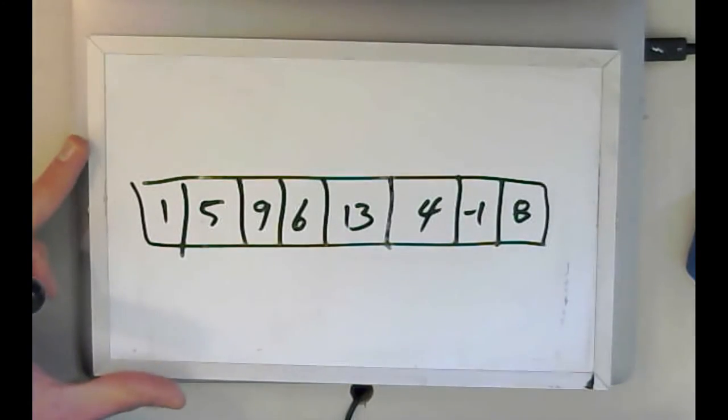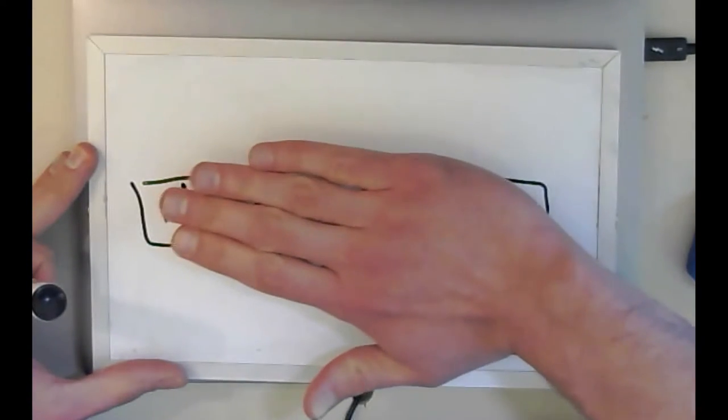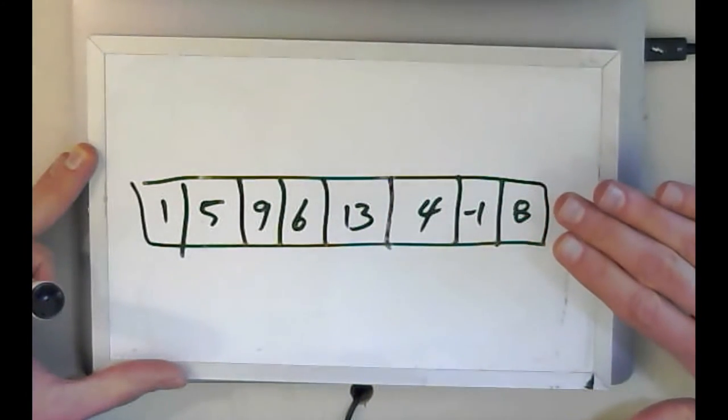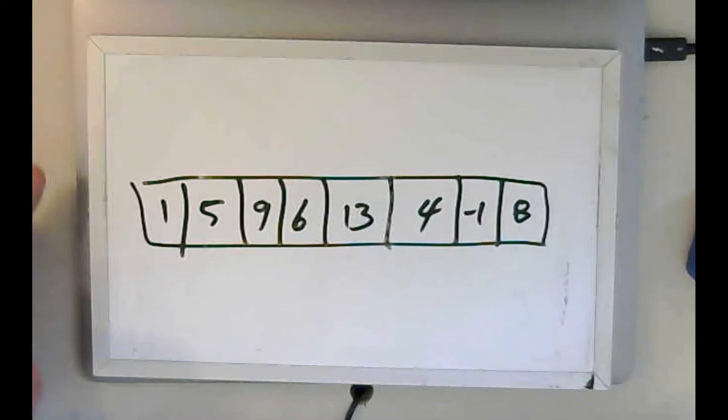Now, if I was looking for something that wasn't in the array, like a two, I would have to do the same thing where I would end up going through all the values, never finding the one that I'm looking for.